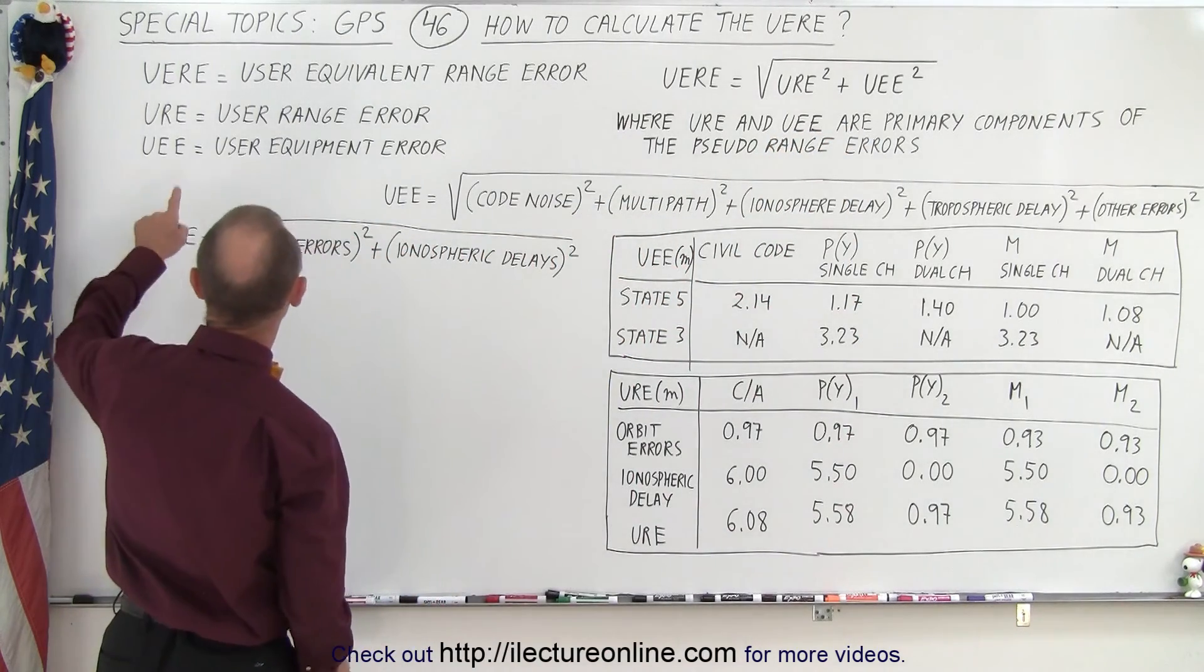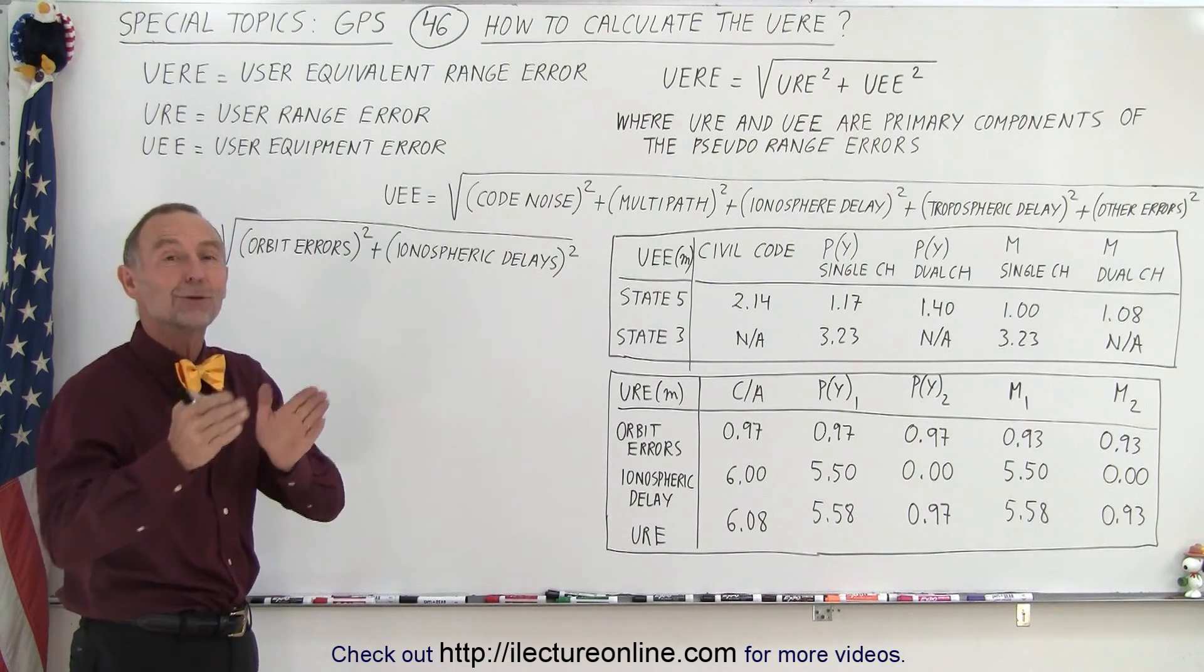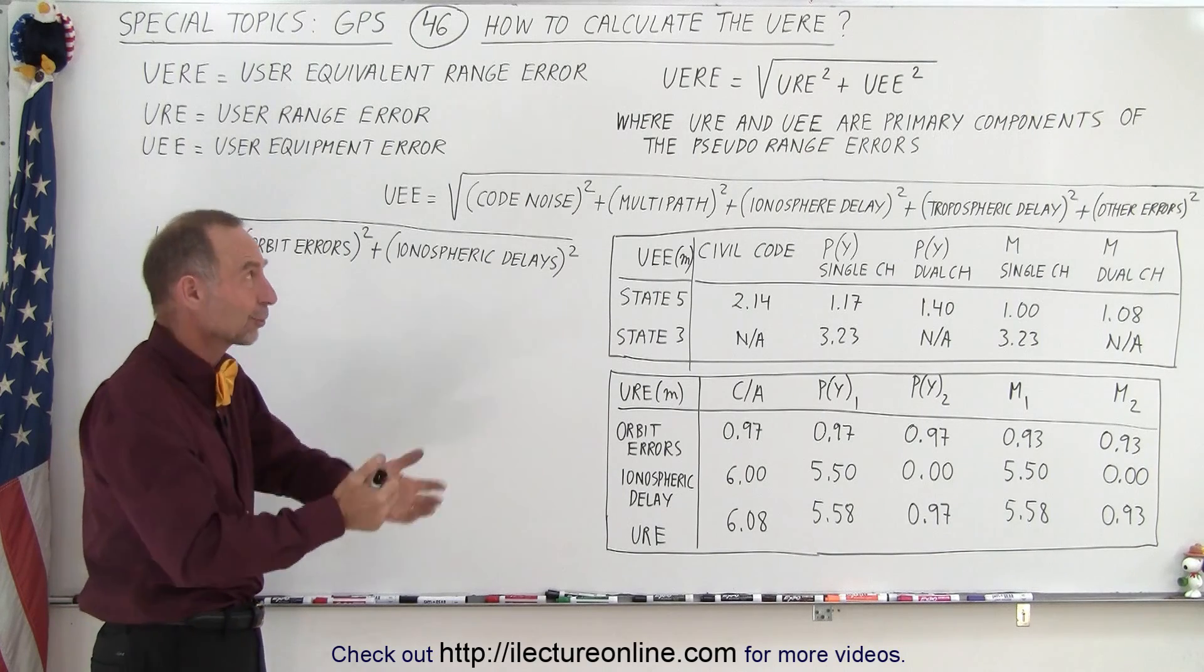Now, the URE is defined as the User Range Error, and we should just call it the Range Error. I don't know why they put the word User in front of that, of course the user is going to be using it.